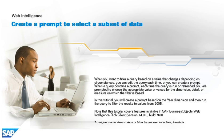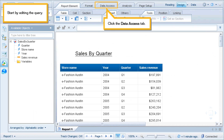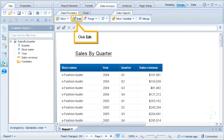To navigate, use the viewer controls or follow the on-screen instructions, if available. Start by editing the query: click the Data Access tab, then click Edit.